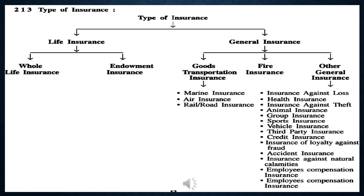Types of insurance are mainly divided into two: life insurance and general insurance. Life insurance is again divided into four types. General insurance is divided into three: goods transportation insurance, fire insurance, and other general insurance. Goods transportation insurance is again divided into three: marine insurance, air insurance, and railroad insurance.